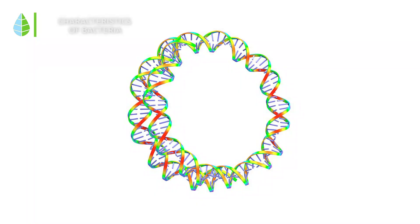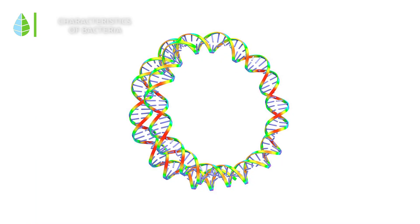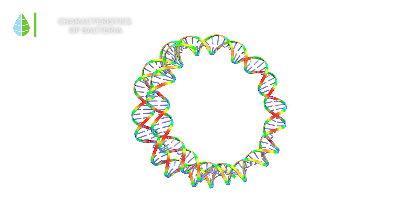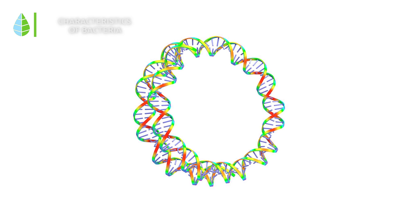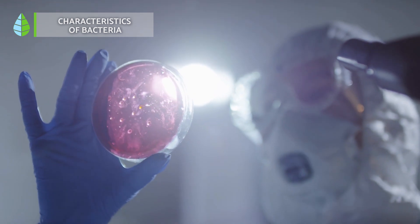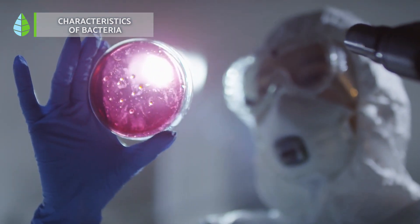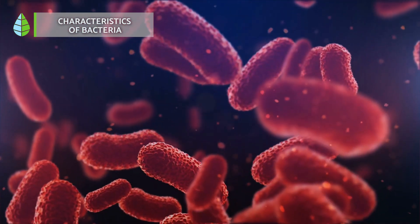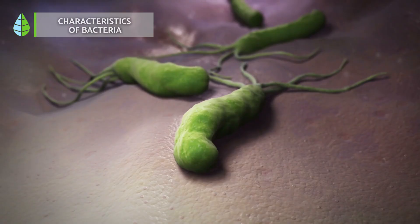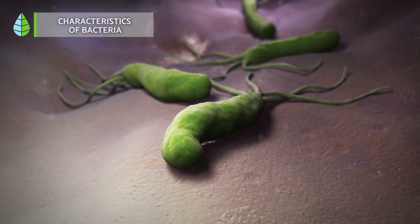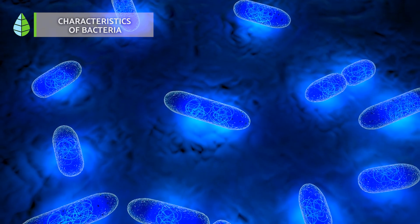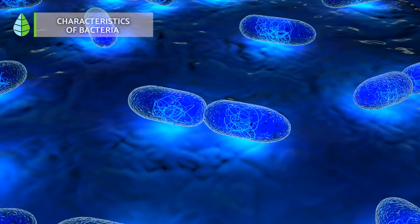Bacteria have circular DNA, meaning their genetic material is in a circular form. They can grow and develop freely, except for some bacteria that require living inside other organisms to obtain energy and nutrients. Lastly, bacteria reproduce by binary fission, a simple process where the mother cell divides into two daughter cells, each carrying an exact replica of the maternal DNA.